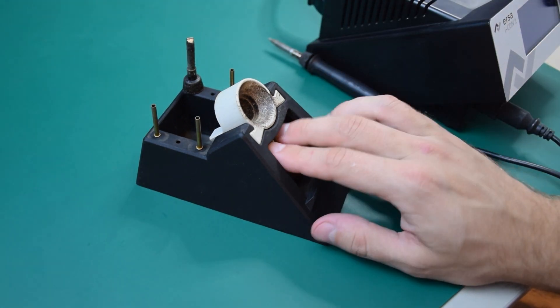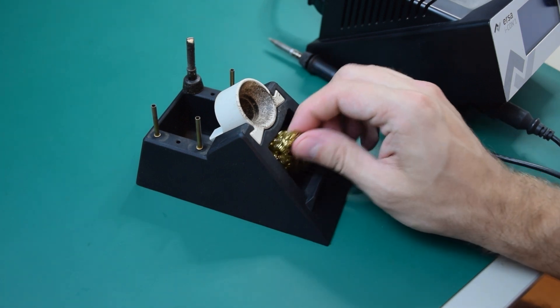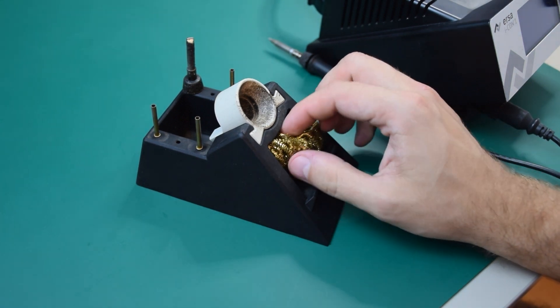So we have the brass pad. Well, we tried to use this with a moist sponge, but the tips didn't like it.